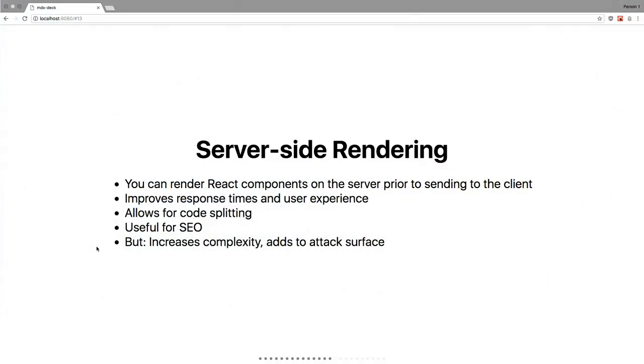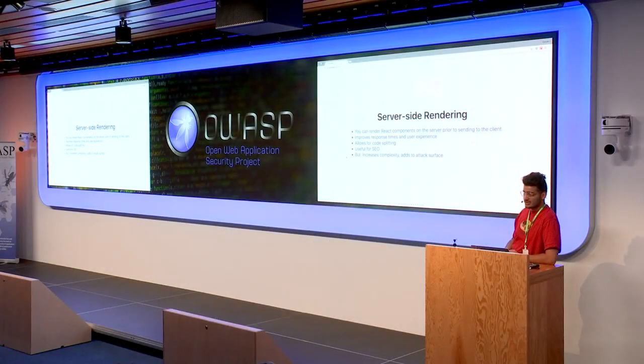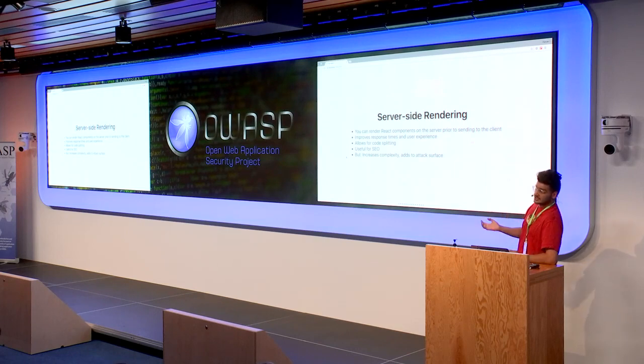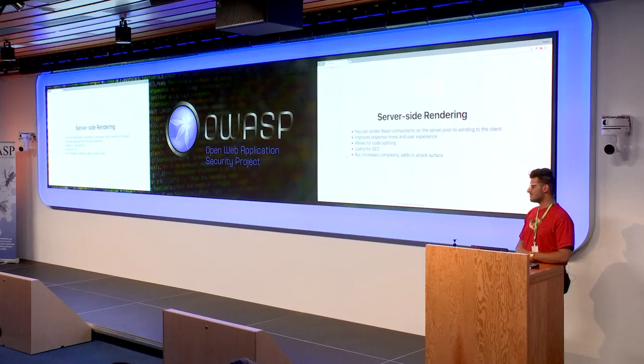Up next I want to talk about server-side rendering. Server-side rendering is not too common, but it's another edge case you have to watch out for. Essentially, as the name suggests, you can render parts of your React application on the server and then serve it to the client. This can lead to better response times and user experience. It also allows for code splitting — sending chunks of the code to the client — and is useful for search engine optimization. But it can lead to increased complexity and adds a bit to the attack surface.